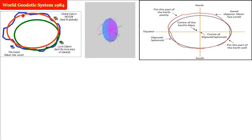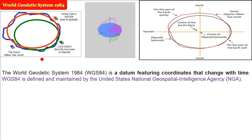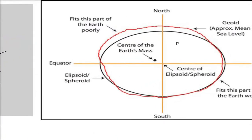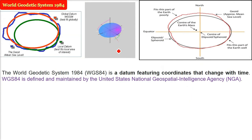WGS 84, or World Geodetic System 1984. Before we go ahead, in order to do the actual mathematical computation, we need a certain object or shape which can be used for computation. Earth is not round, it is not of any regular shape — it is a geoid. So we need a certain ellipsoid or shape which can best fit globally over the earth.